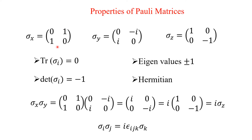Now we will see some more properties of Pauli matrices. Look into the trace, that is the sum of the diagonal elements. For Sigma X the trace is 0, for Sigma Y it is also 0, and for Sigma Z it is 1 minus 1, which is also 0. That means the trace of Sigma_i, where i = X, Y, Z, is equal to 0.